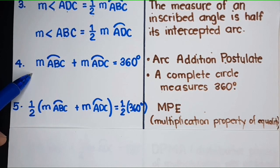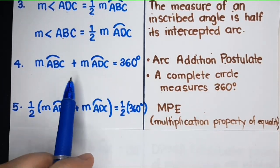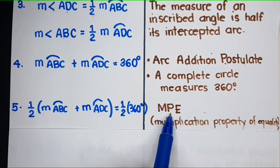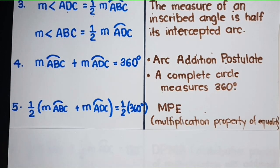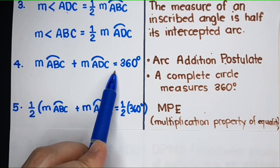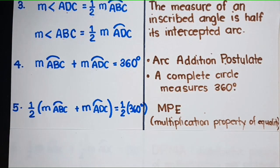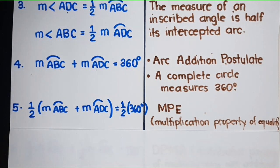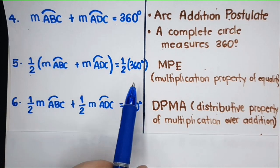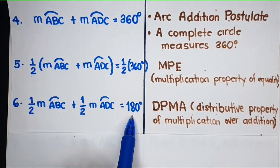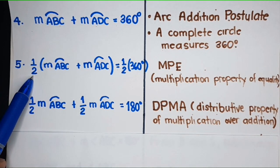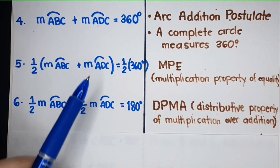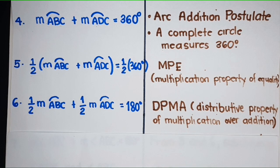After statement four, we multiply both sides by one half — that's the multiplication property of equality. What is one half of 360 degrees? It's 180 degrees. Then we distribute the one half to both terms. The reason is the distributive property of multiplication over addition.